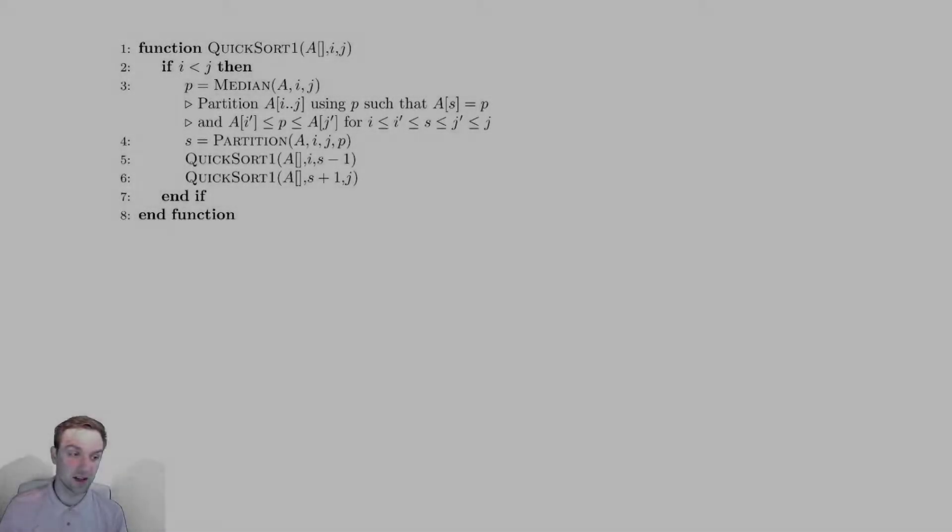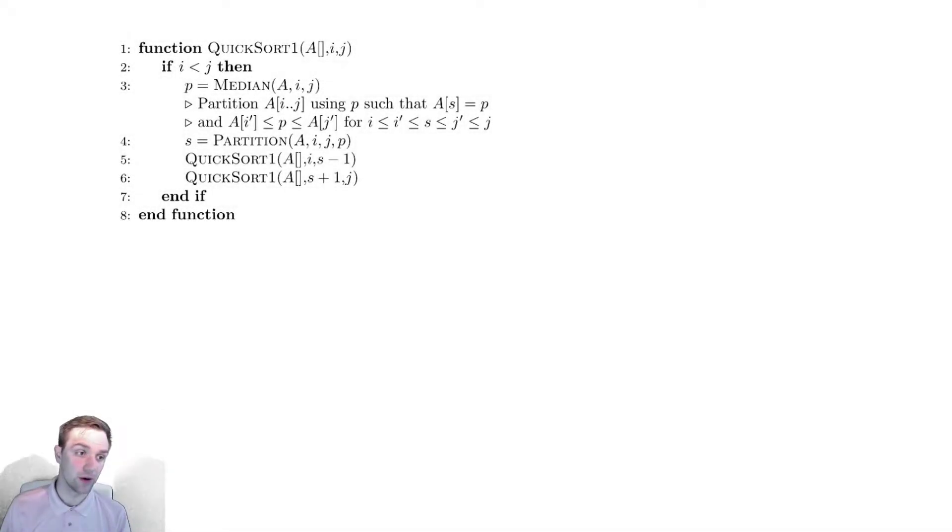In this video, having discussed the partition method, we are going to now try to analyze an implementation of quicksort. We call it quicksort 1 here.